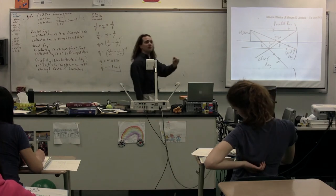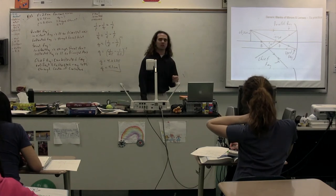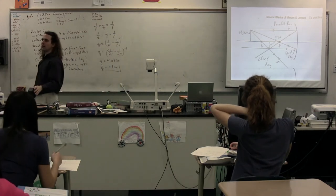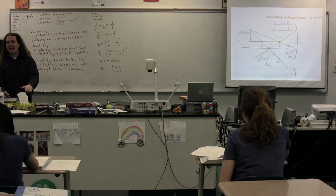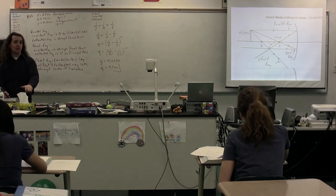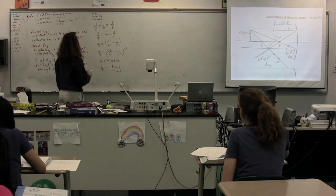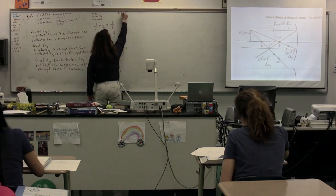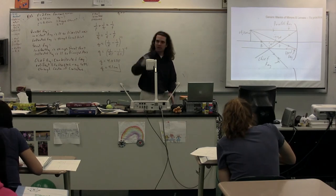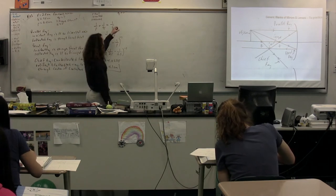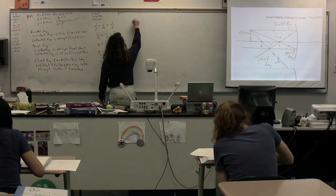Now, from the image distance, we can see one of our image characteristics. Since Q is greater than zero, the image is in front of the mirror. Because the image distance is greater than zero and the image is in front of the mirror, we can tell that it is a real image. We can also figure out the magnification.